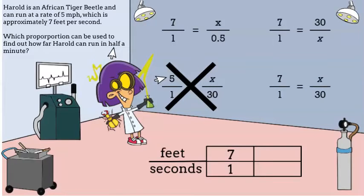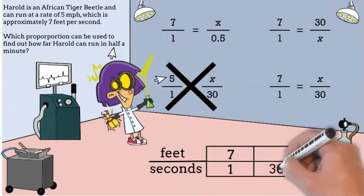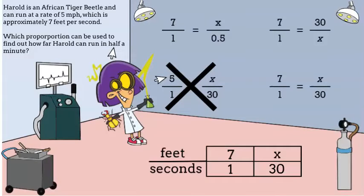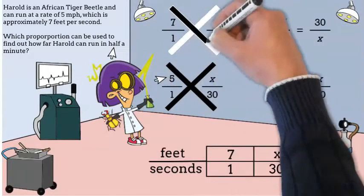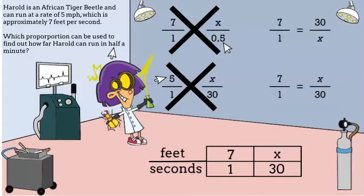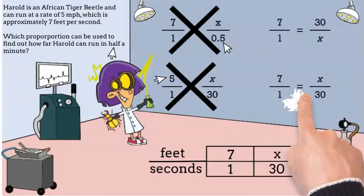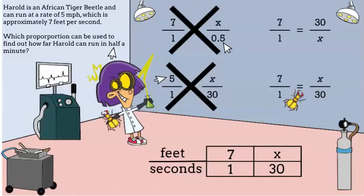The question asks how far Harold can run in half a minute. A minute is 60 seconds, so half a minute is 30 seconds. The answer choice that uses 0.5 is just trying to trick people — let's eliminate it. We've narrowed it down to two answer choices that use all the same numbers. That's right, it's the bottom one. The numerators have to stand for the same thing and the denominators have to stand for the same thing.